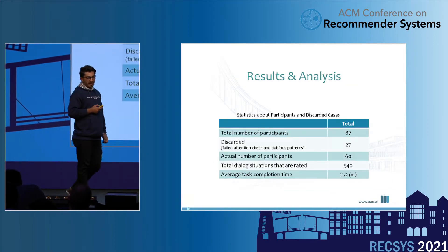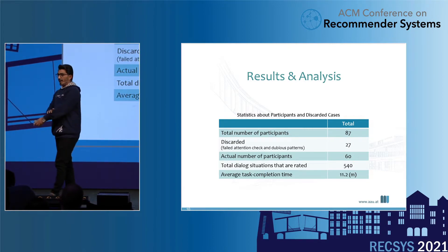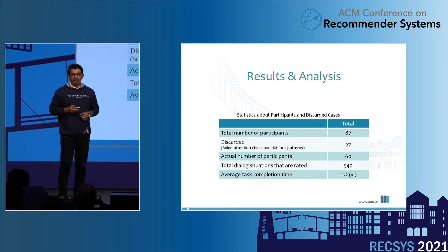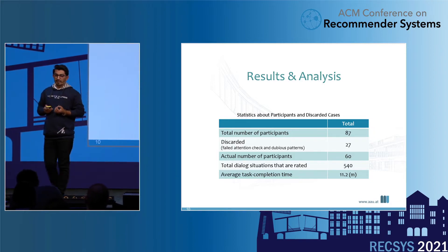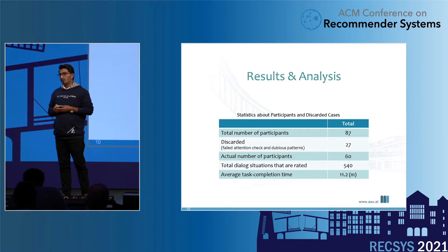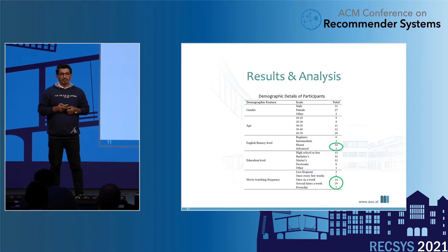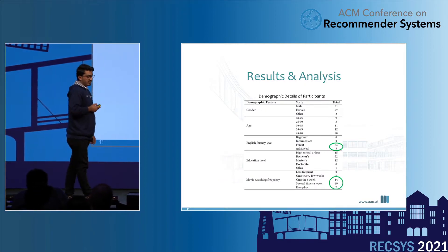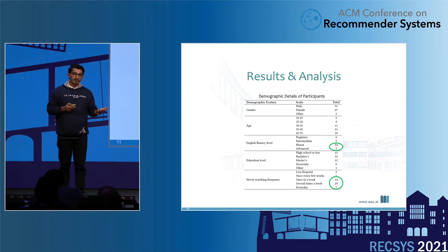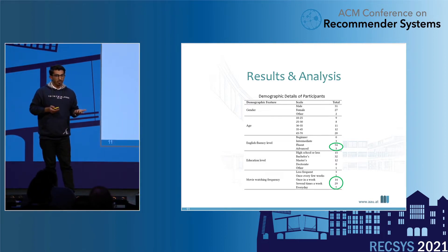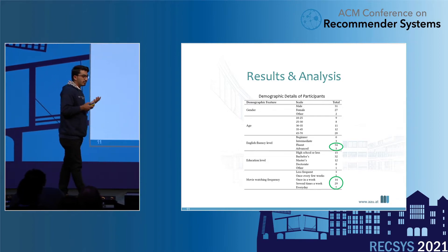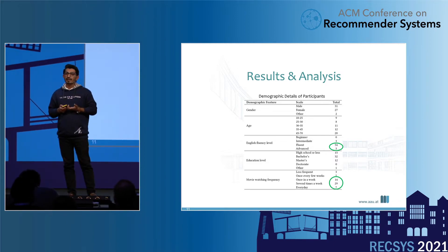In total, 87 participants accomplished the task. Out of them, 27 cases were rejected based on failed attention checks or dubious patterns found during manual inspection. Finally, we were left with 60 valid participants, yielding 540 rated dialogue situations. On average, participants took 11.2 minutes to complete the task. The demographic details show that a majority of participants were fluent in English and were active movie watchers — a background essentially required for this domain. Such analysis of participant background was missing in many prior works on CRS.